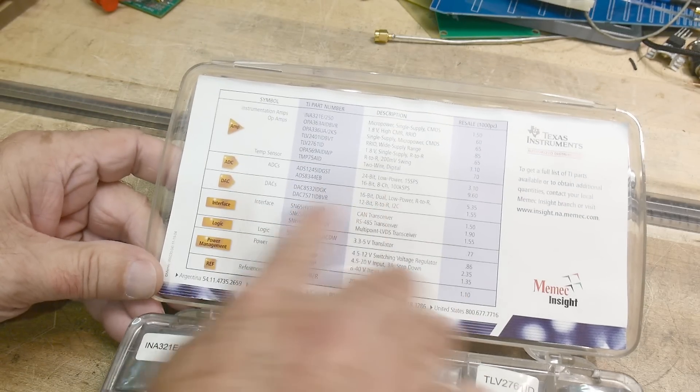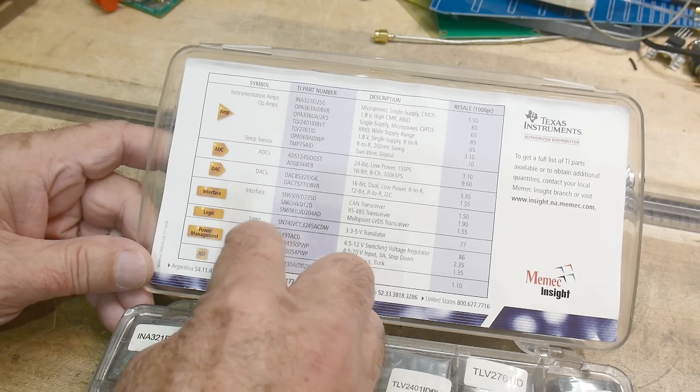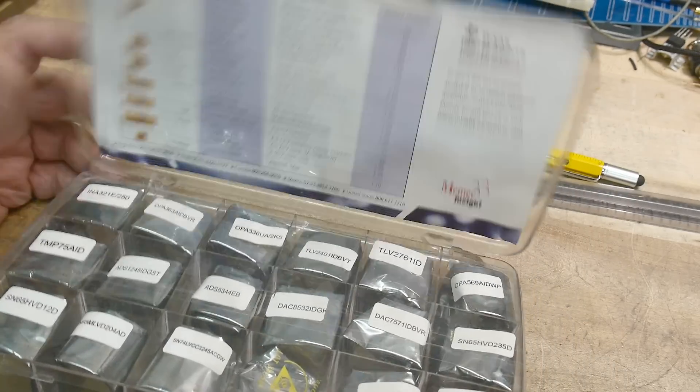There was this nice kit here for $5. It has all kinds of Texas Instruments parts: op amps, A to Ds, D to As, interface chips, logic, power, references. It was like a kit you got from Texas Instruments, so I picked that up.